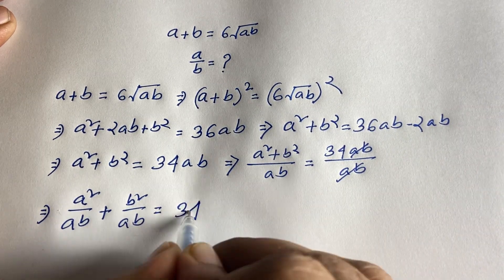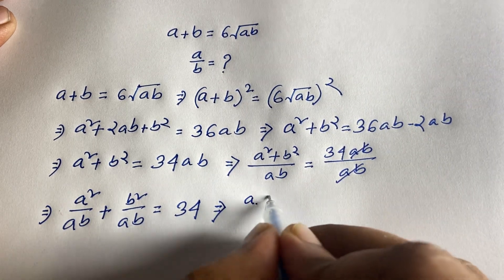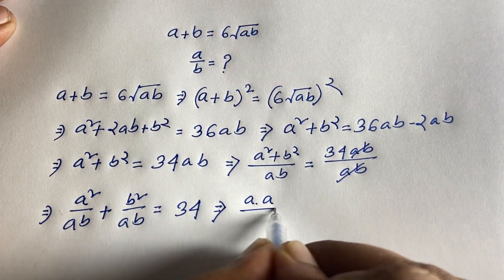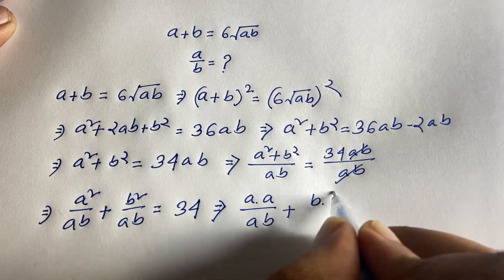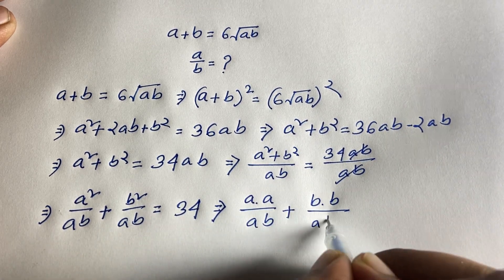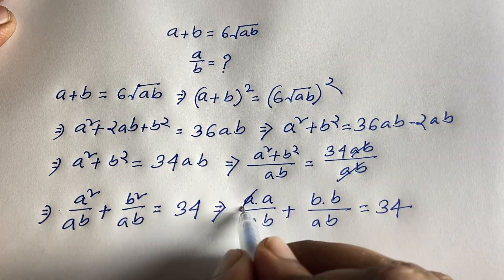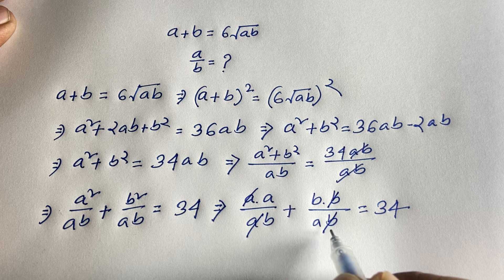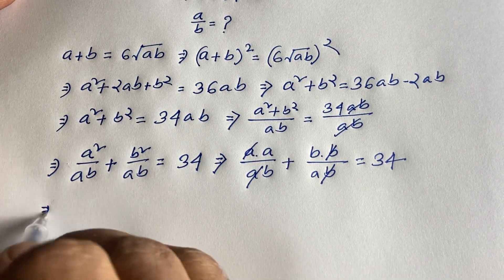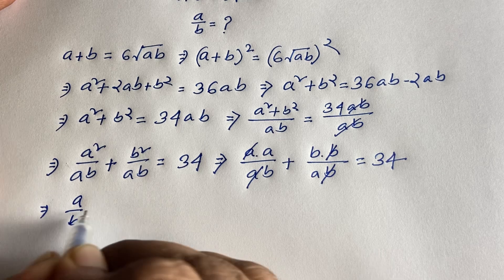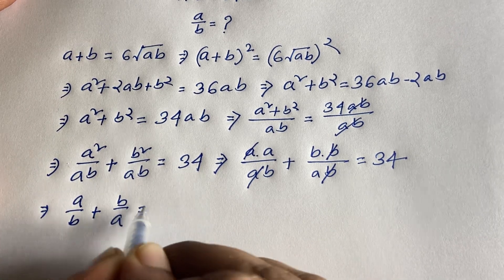Simplifying: a²/ab is a×a over ab, so the a's cancel to give a/b. Similarly, b²/ab simplifies to b/a. So we get a/b + b/a is equal to 34.